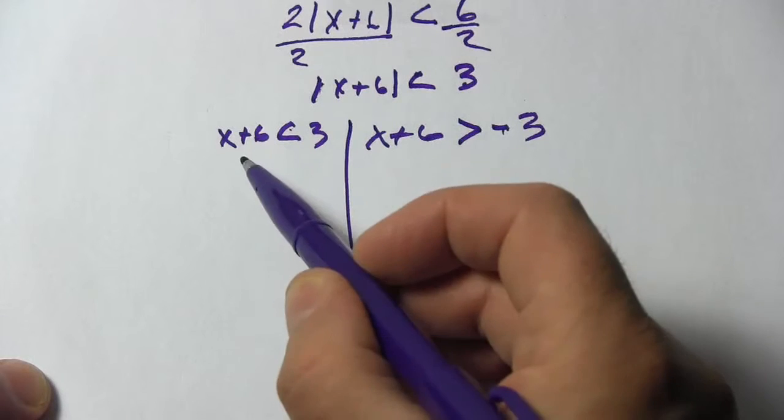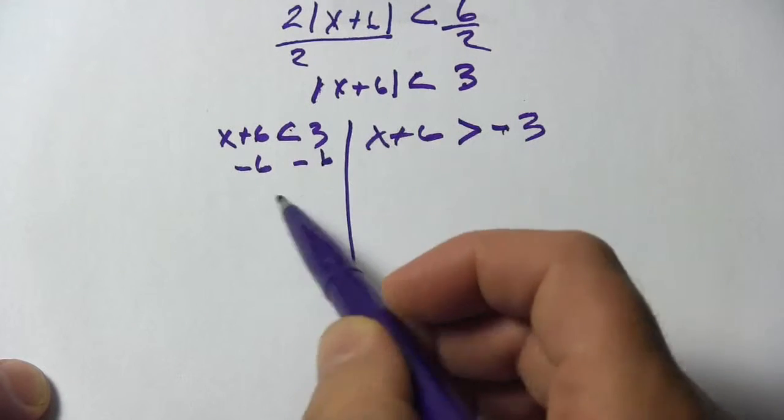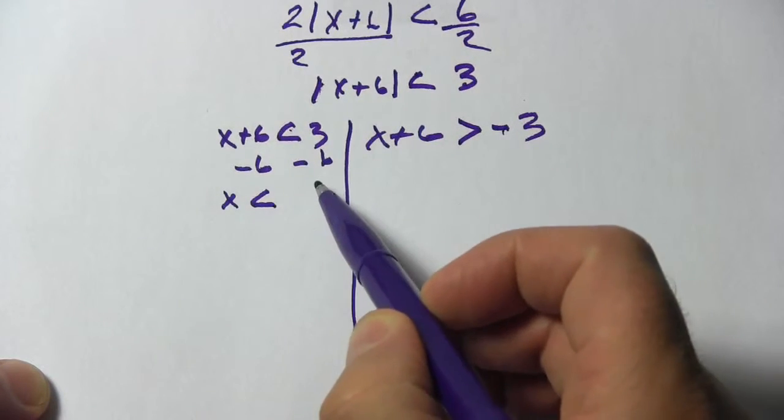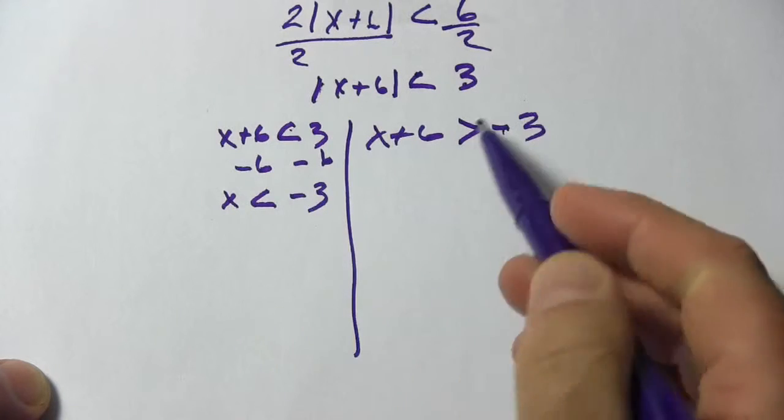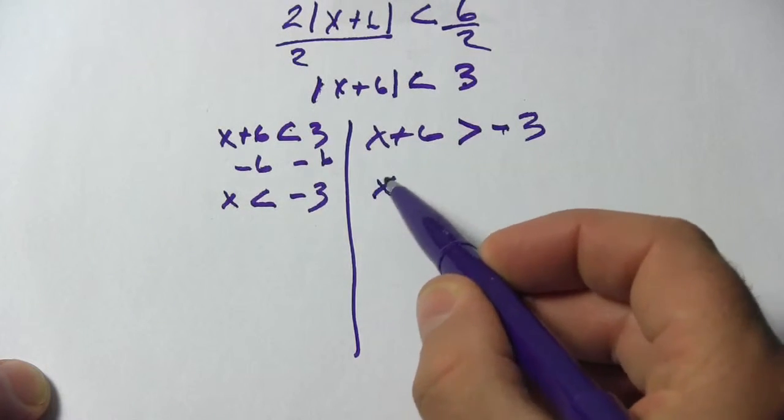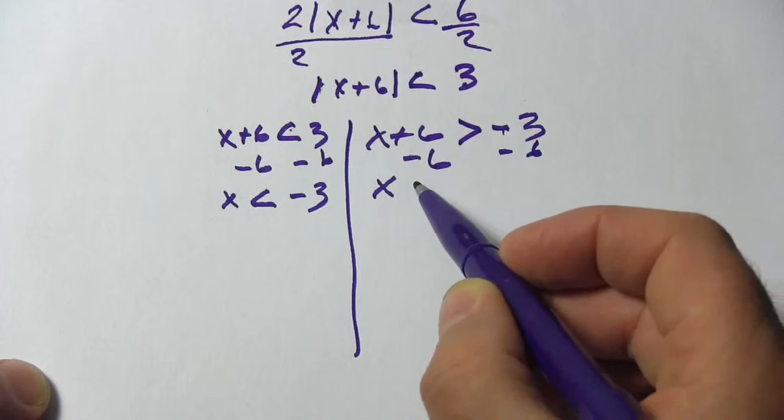Now we solve both of these. I'm going to subtract 6 from both sides, and I get x is less than negative 3. And here, subtract 6 from both sides, x is greater than negative 9.